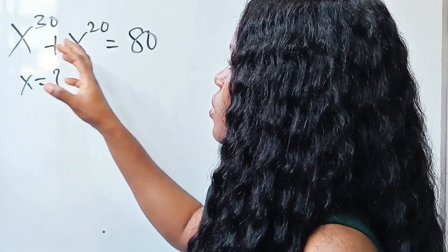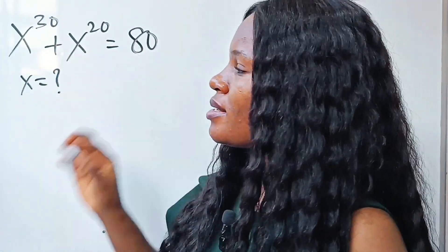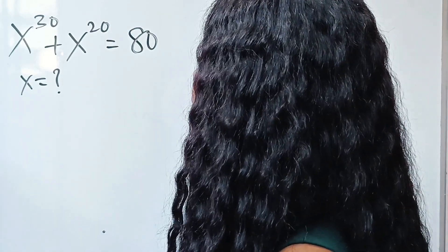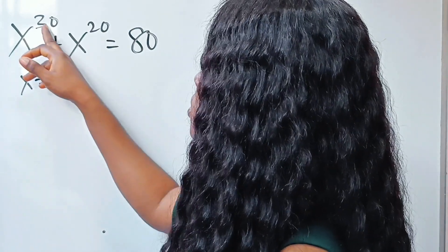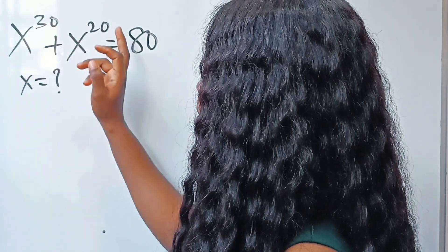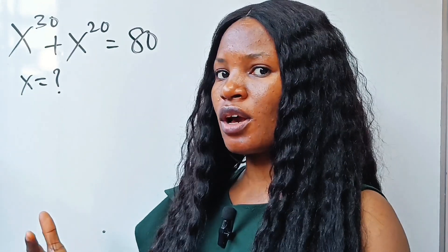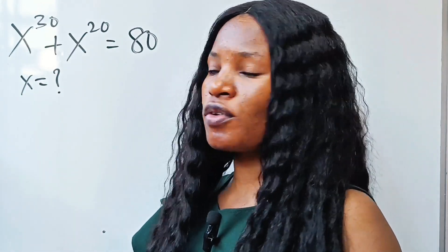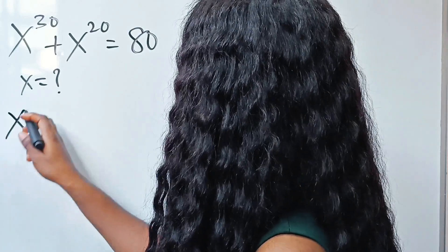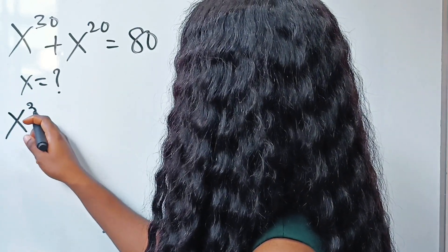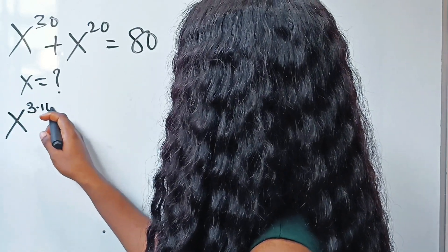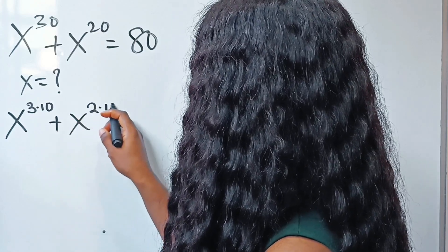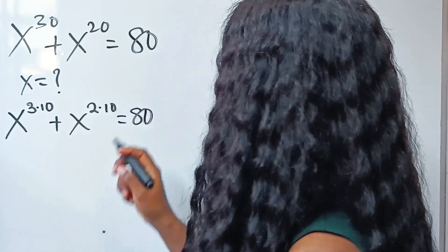When I looked at this, what I saw is how can I factorize this and make it a polynomial. The first thing I did is: if I want to factorize 30 and 20, they have something in common — I can easily bring out a power of 3 and power of 2. So I rewrote it as x to the power of 3 times 10, plus x to the power of 2 times 10, is equal to 80.